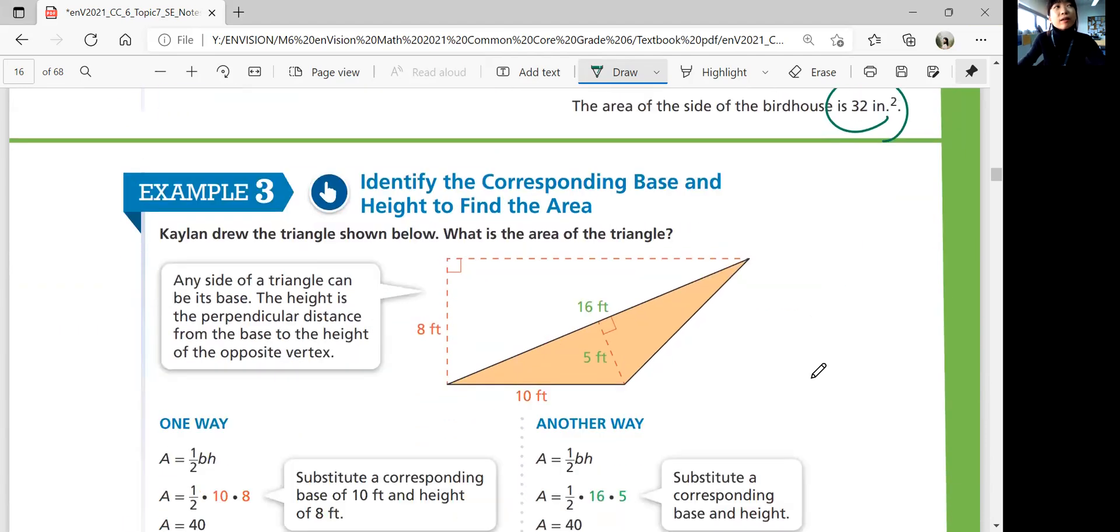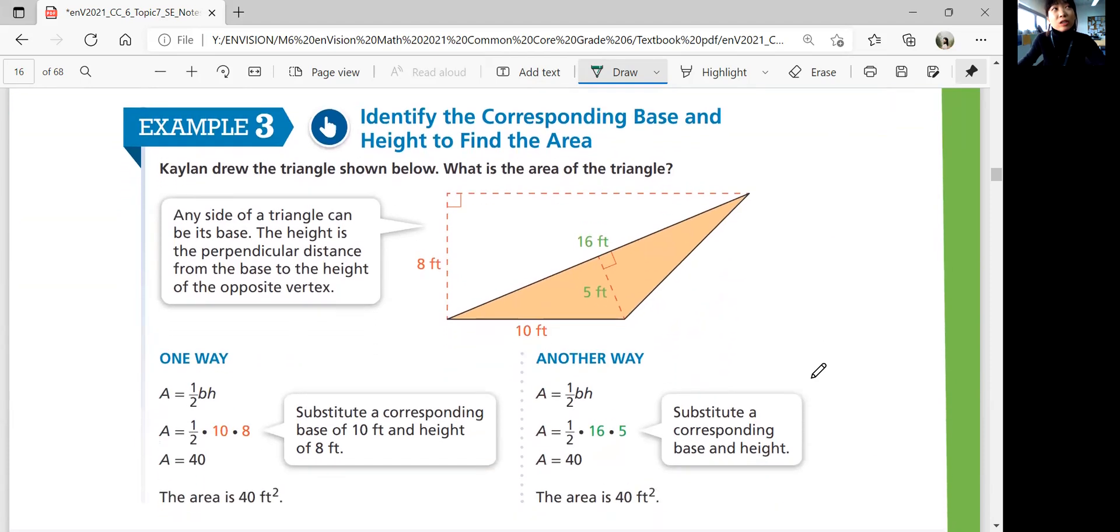Example 3. Identify the corresponding base and height to find the area. Kaylin drew the triangle shown below. What is the area of the triangle? Which one is a base and which one is a height? Any side of a triangle can be its base. Did you know that? The height, though, has to be the perpendicular distance from the base to the height of the opposite vertex.